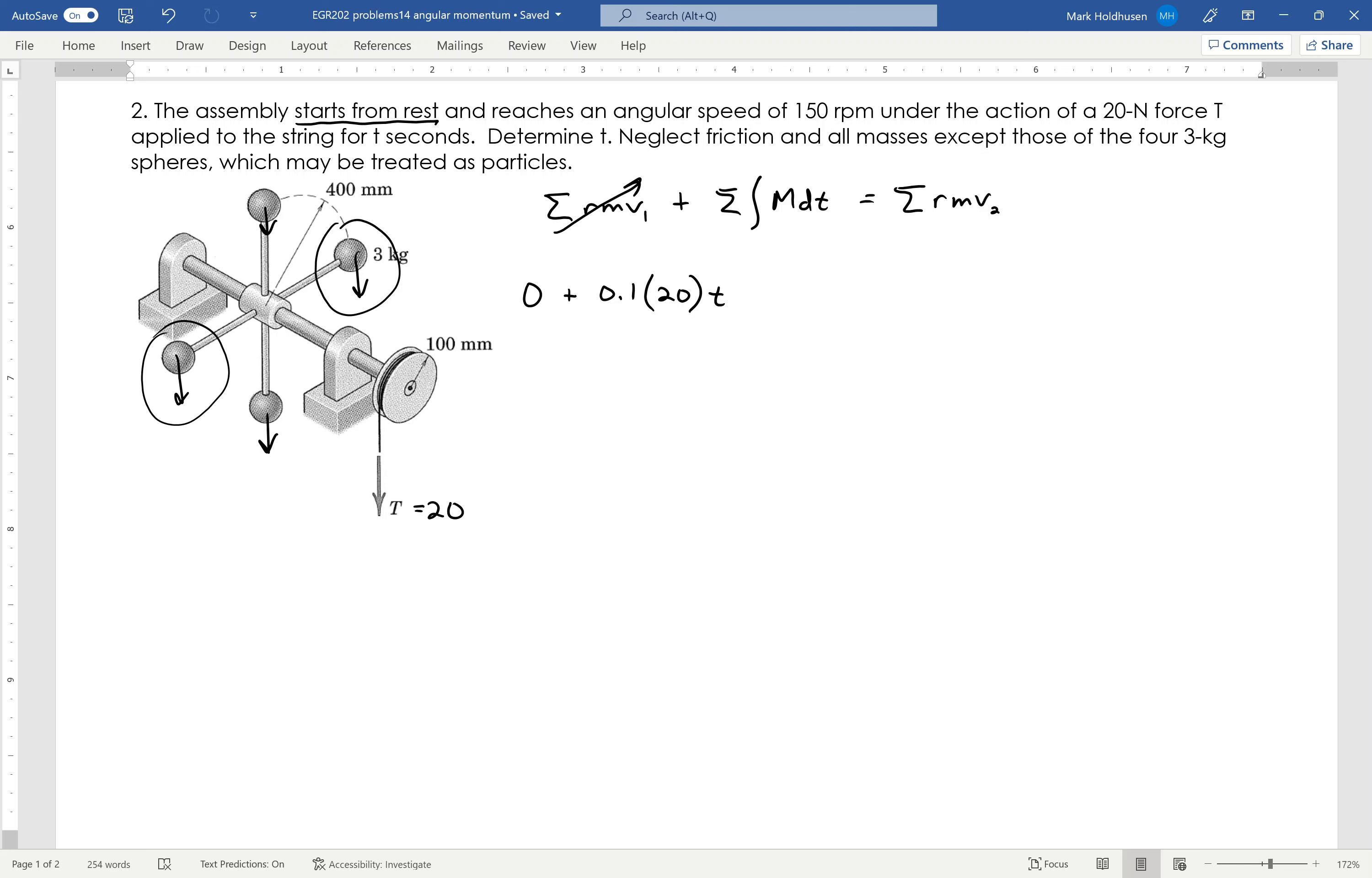So the only external force, yes, gravity is there, but they're always canceling each other out due to symmetry. So the only external moment that I have is that tension pulling on the pulley there, and what that's going to equal is the RMV of all of the balls. So it's going to be 4 times 0.4 times the mass of 3 times the velocity.